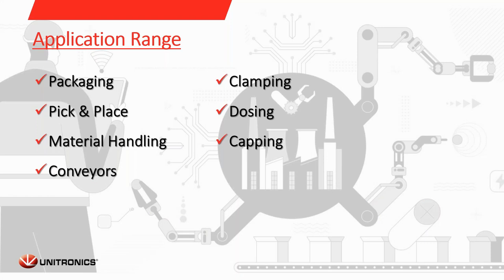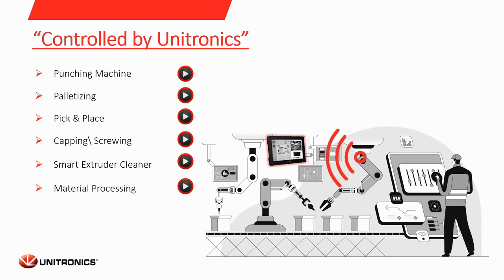What kinds of applications can you implement our servos in? In the packaging industry, there are many applications: pick-and-place, material handling, conveyors, dosing applications, and even torque and force control applications like clamping or capping. The next slide will show some application stories with Unitronics equipment. As with the previous video, it will be a bit laggy, but I've asked our marketing department to send links for these videos so you can watch them later with higher quality.